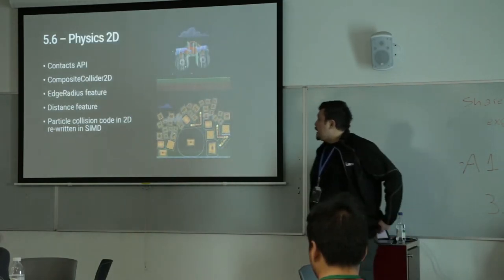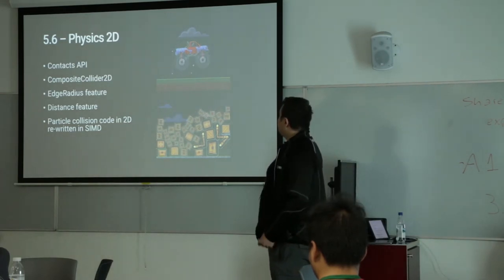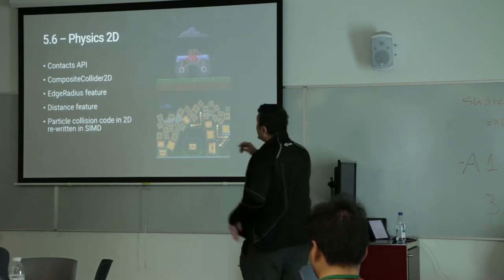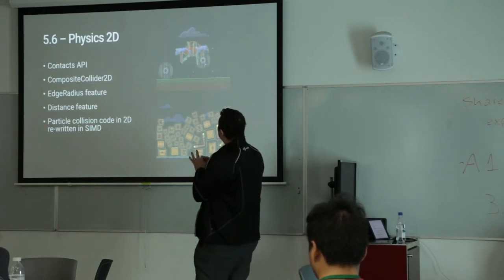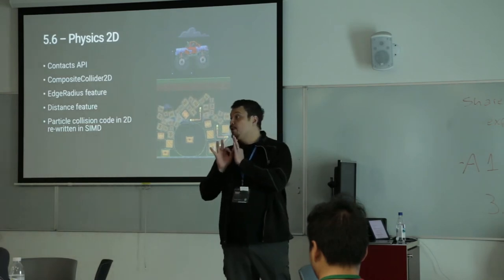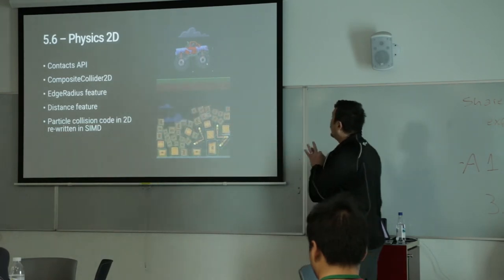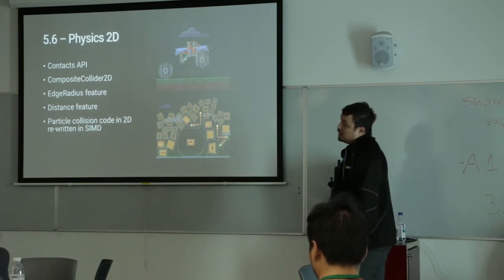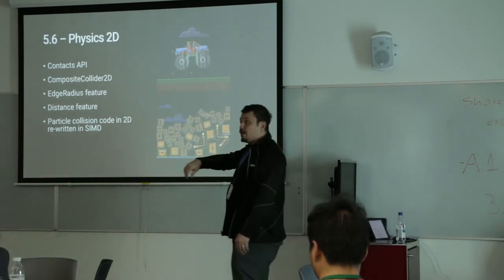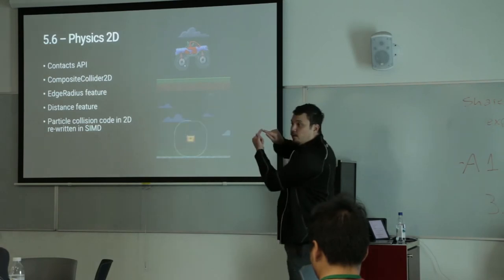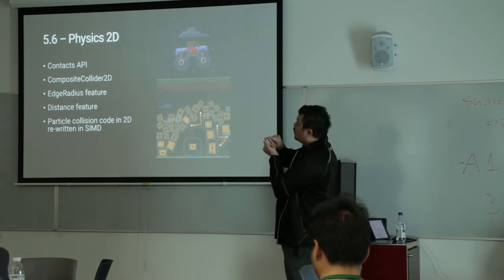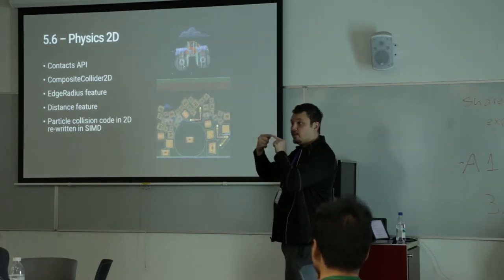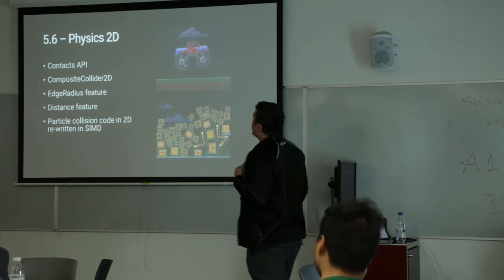There have been a lot of cool changes in 2D physics. We added a Contact API. If you need more information about how colliders are actually interacting, the Contact API tells you about those points of contact — what they are, where they are, what's happening at those points. A good use case: if you're making a game where you fire a rocket at a spaceship, and you want to spawn an explosion not on the rocket or the spaceship, but at the point of contact — you can get that from the contact system.